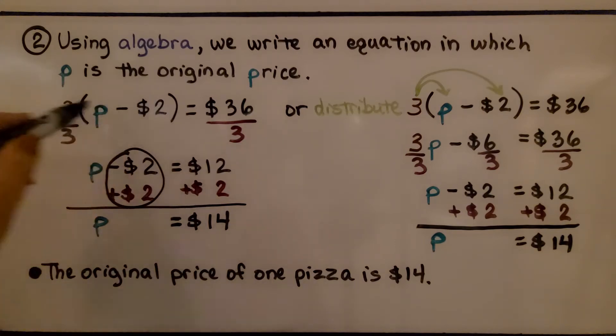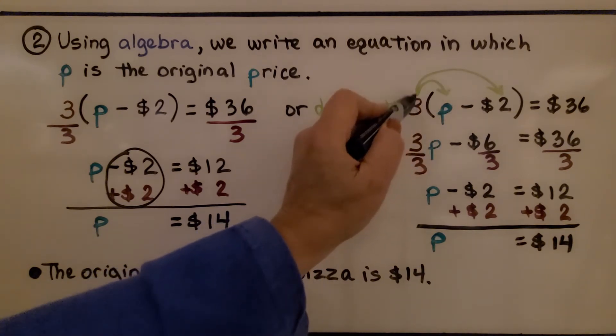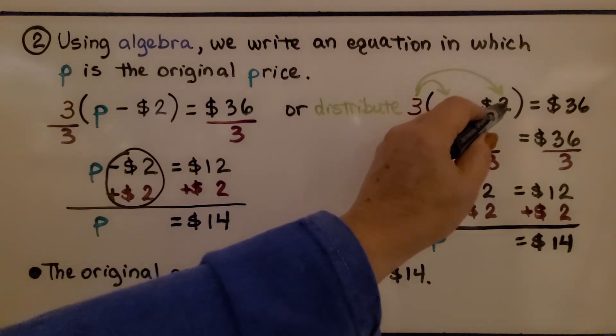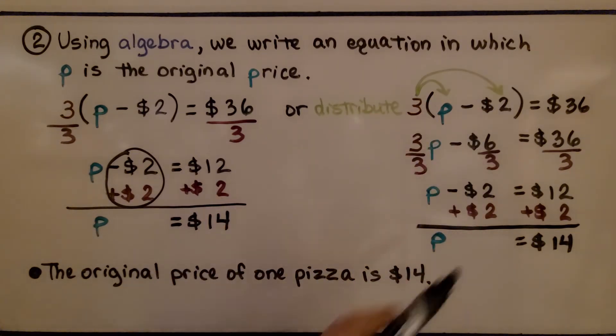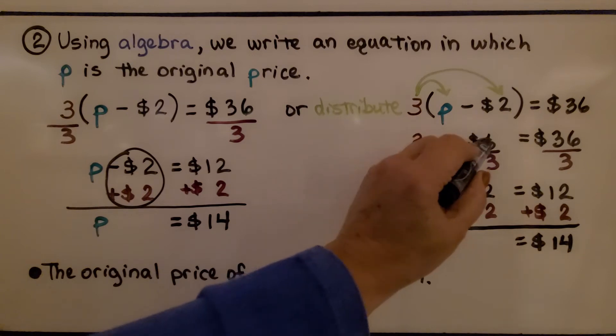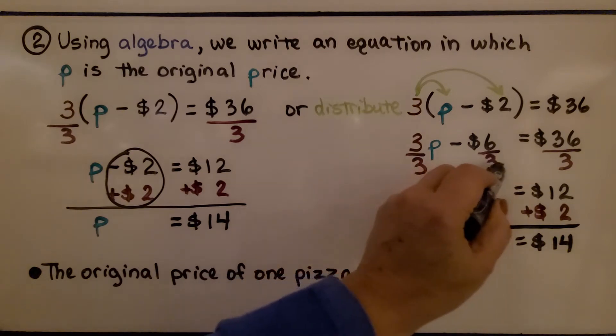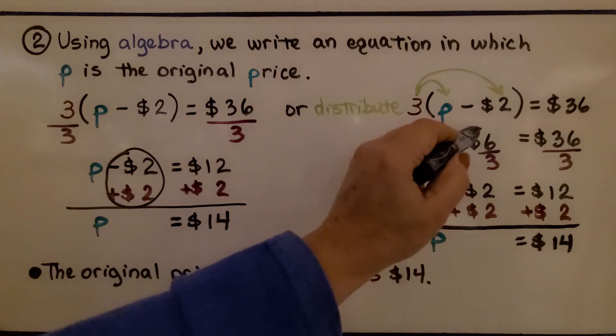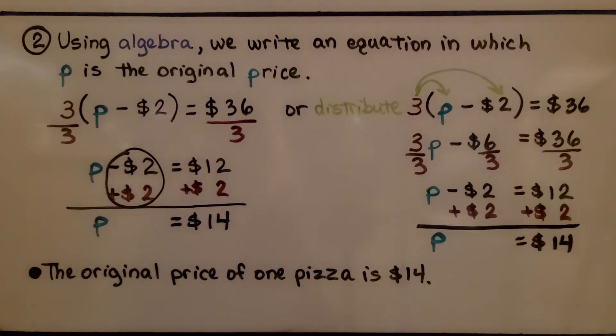Now, when it was in this form, we could have distributed the 3 to the p. This is 3 times p and minus, because we have a minus here, 3 times a negative $2. That's going to be a negative $6 or a minus $6. And that's equal to $36. Now, we have 3p minus $6 is equal to $36. Then we would divide each term by 3. So we would have 1p, same numerator and denominator, minus $6 divided by 3 is 2, and $36 divided by 3 is $12.